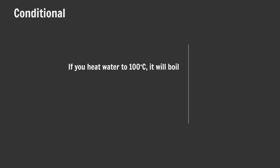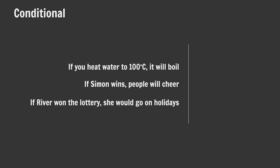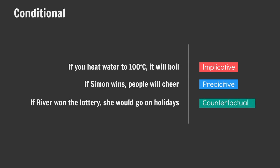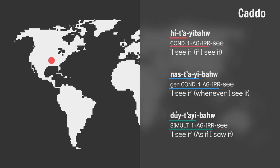'If you heat the water to 100 degrees, it will boil.' 'If Simon wins, people will cheer.' 'If River won the lottery, she would go on holidays.' The first is an implicative conditional — basically, if this holds, then so does that. The second is a predictive conditional — if this were to happen, then that would also happen. And the last is a counterfactual conditional, where a situation is dependent on a false or unlikely condition. English uses many words to convey nuanced conditional meanings; other languages, like Caddo, use conditional moods.